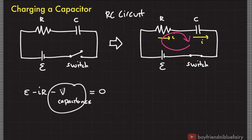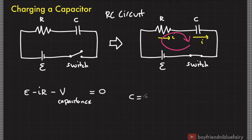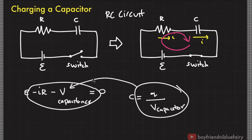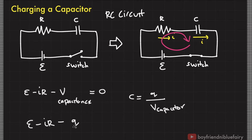Observe that this term is negative because the presence of the capacitor results in a decrease in overall current. Recall that the definition of capacitance is C equals charge over the potential difference of the capacitor. We can use this expression to convert the entire equation in terms of charge and capacitance, and then solve the equation for charge.